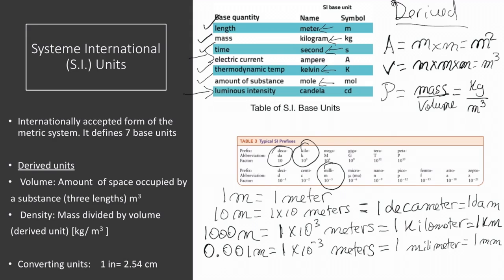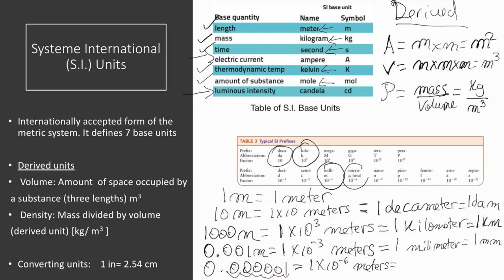If we want to get something like 0.000001, that is 1 times 10 to the negative 6 meters, and this is 1 micrometer, or 1 μm.